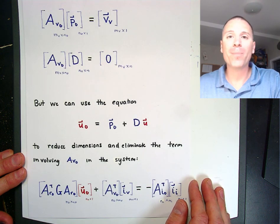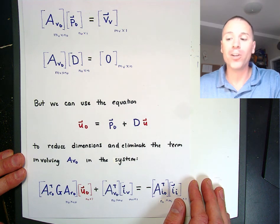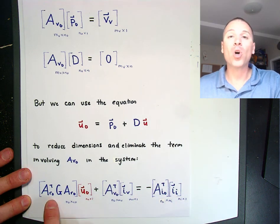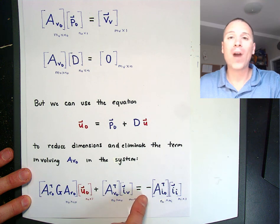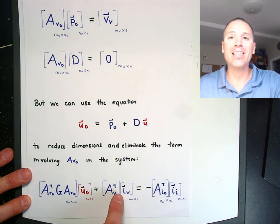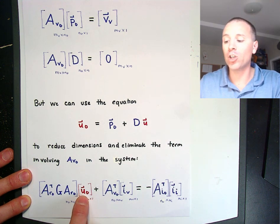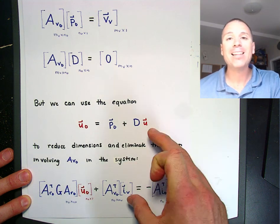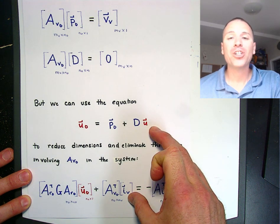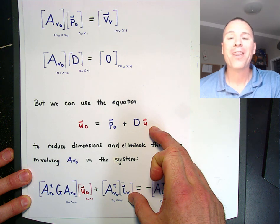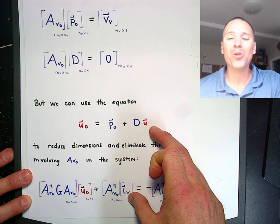We've now been talking about reducing our dimensions to get a non-singular linear systems problem for many videos, and we're now in a place to do that. Here are all three sets of grounded circuit equations — KVLs, BCRs, and KCLs — and here's a way to eliminate the dependent information in the vector u sub 0. If we combine these two things together, we can come out with a linear systems problem in a really beautiful form. That's exactly what we're going to do in step 11. I'll see you in the next video.